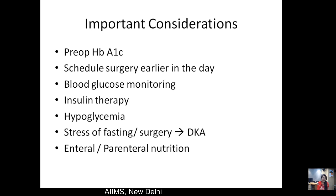Key perioperative management considerations include: HbA1c level — an HbA1c above 8% warrants postponing elective surgery until glycemic control is achieved. Diabetic patients should be posted earlier in the day, not the later half, as fasting combined with surgical and anesthetic stress adds further metabolic burden. Blood glucose monitoring and insulin therapy are additional considerations in diabetic surgical patients. Hypoglycemia remains an important risk factor for perioperative morbidity and mortality.